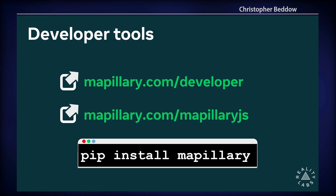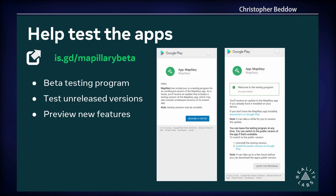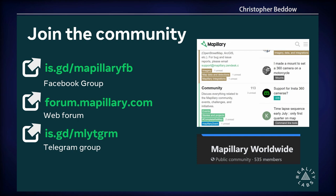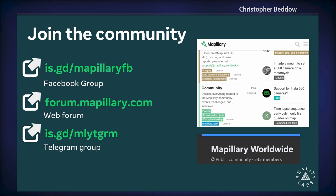For developer tools, Mapillary.com/developer is the hub. The open-source MapillaryJS library helps with viewing images in a JavaScript context, and you can do pip install mapillary to get the Mapillary Python SDK for API requests. You can also join the beta testing program at the provided URL to get preview builds of the mobile app and see new features before they're official. Finally, we invite you to join the community — web forums, the Mapillary Worldwide Facebook group with over 500 members, and a Telegram group with active discussion on cameras, editing sequences, and images. That's all — I'll take your questions.